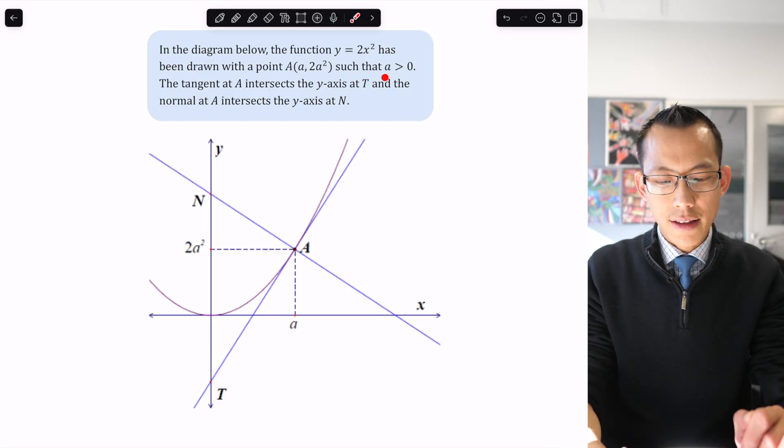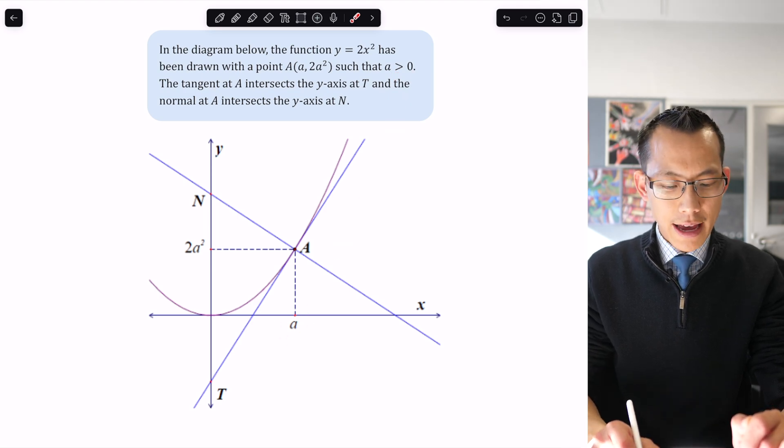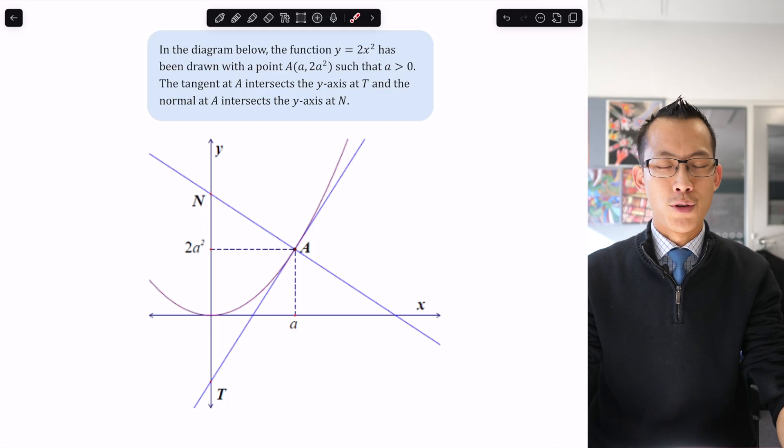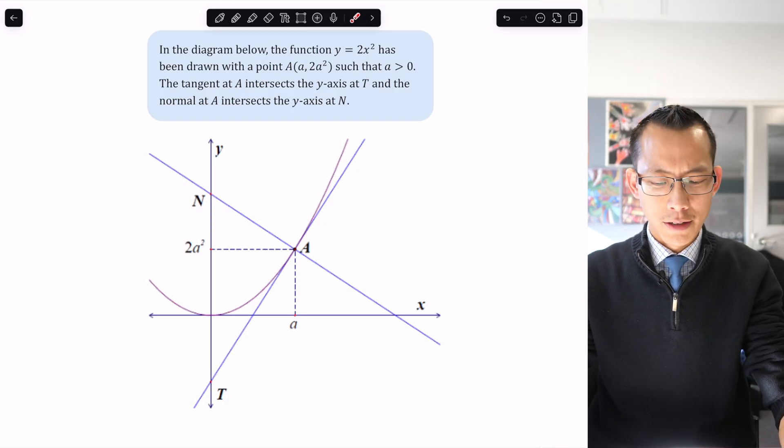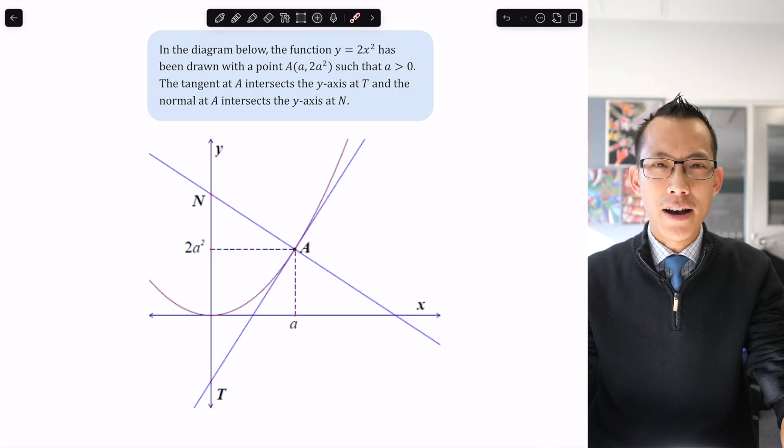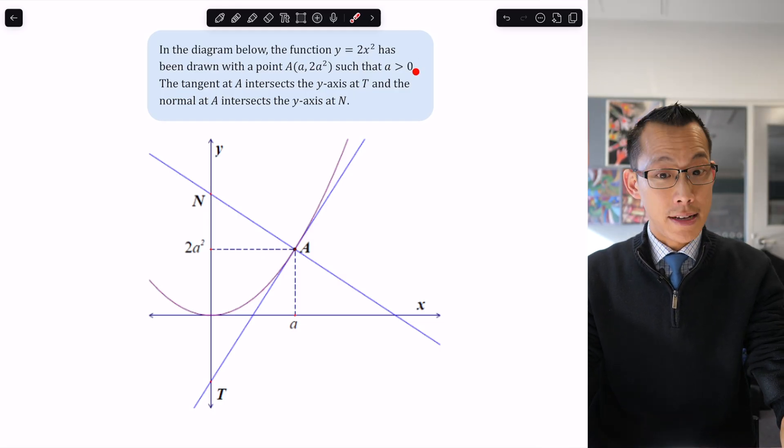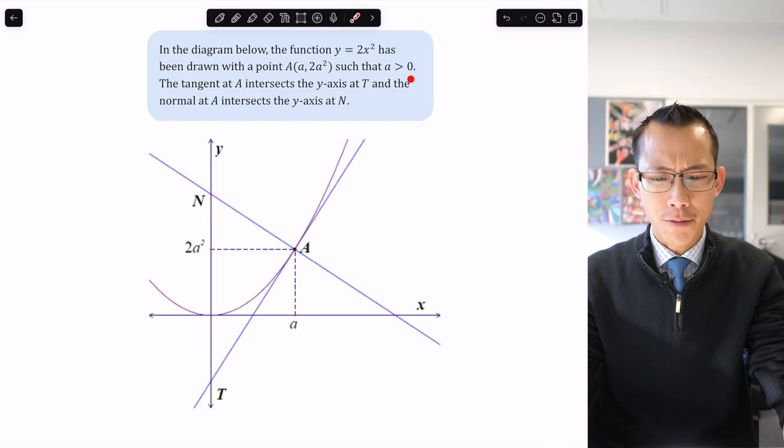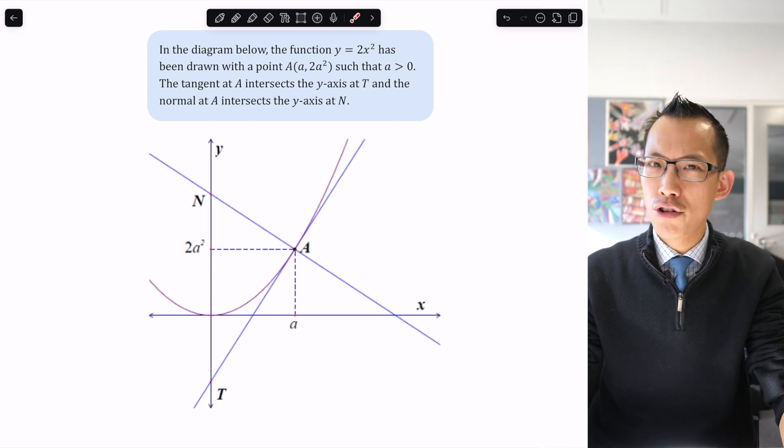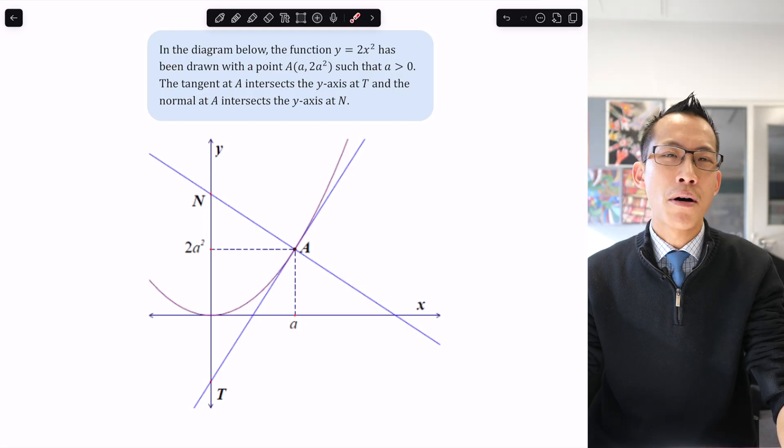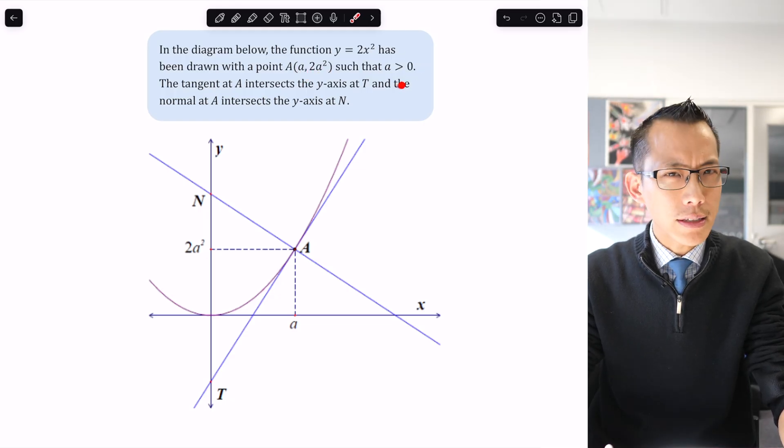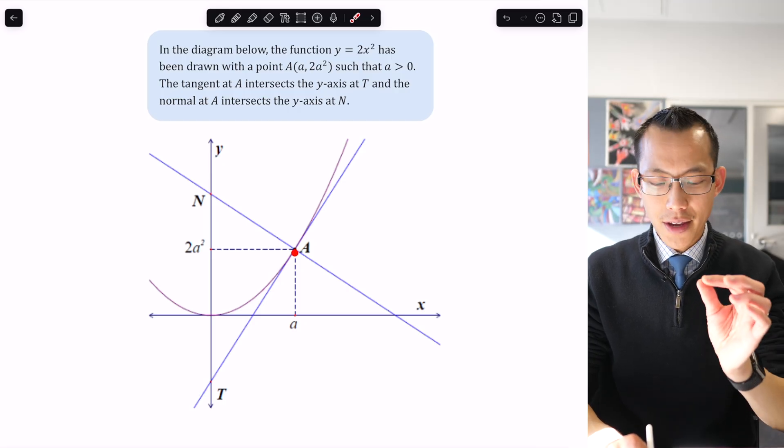It says little a is greater than zero. We need to pay attention to this. Little a is a pronumeral, but it's a variable. The way I know this is it says a is greater than zero, meaning a could be one, two, a quarter, or anything. Not all pronumerals are variable; some like π and e are constant.